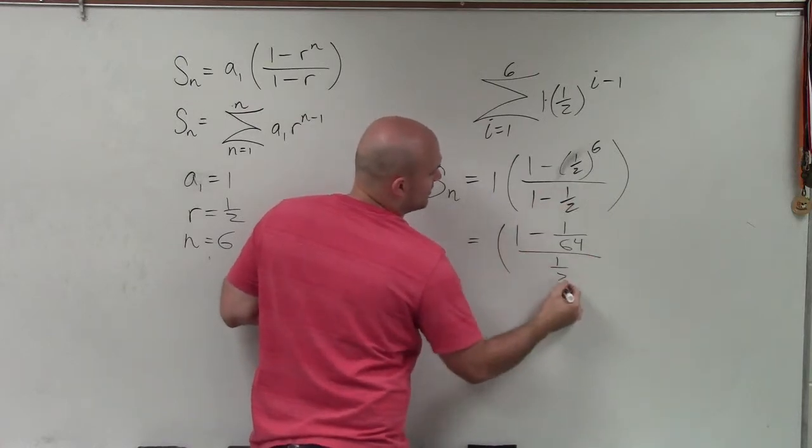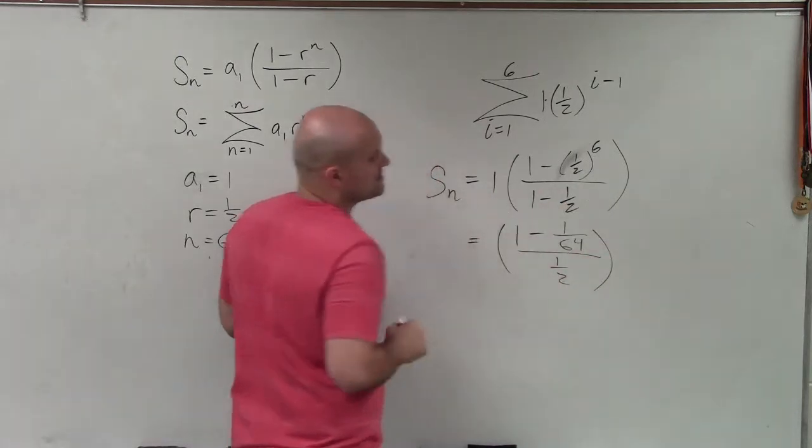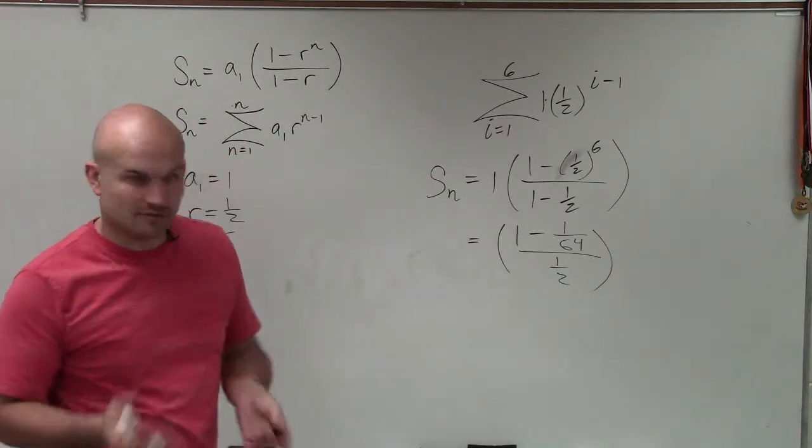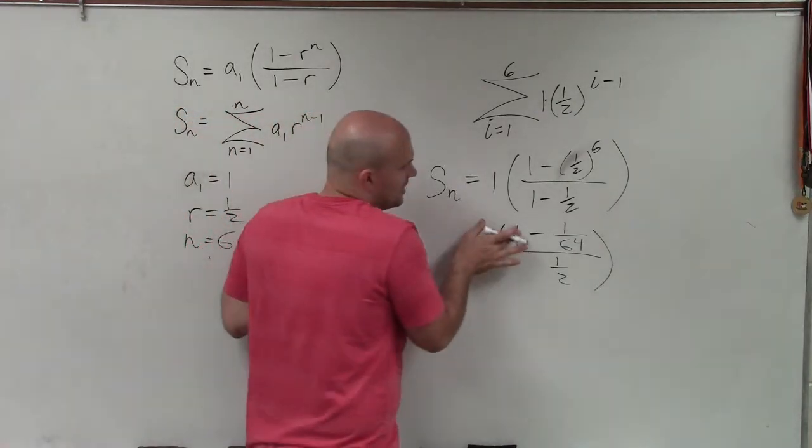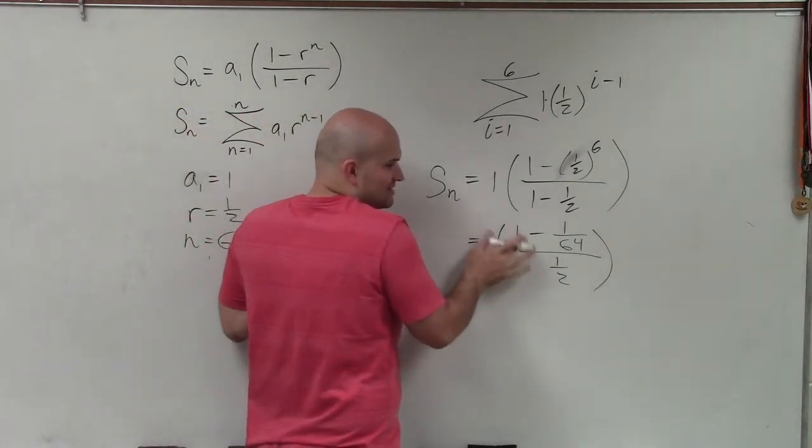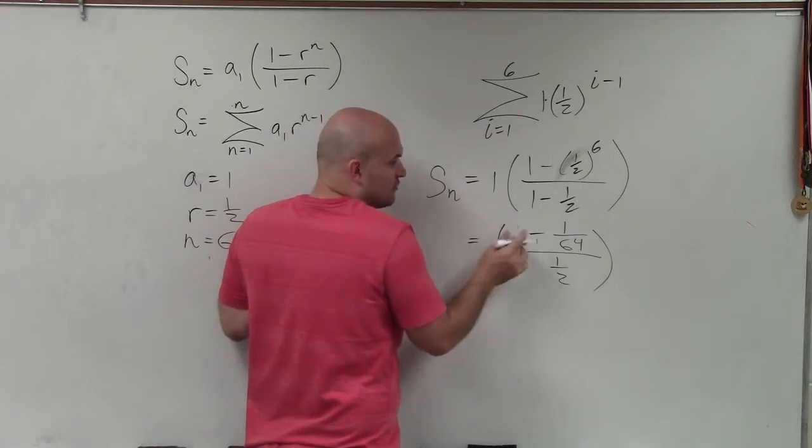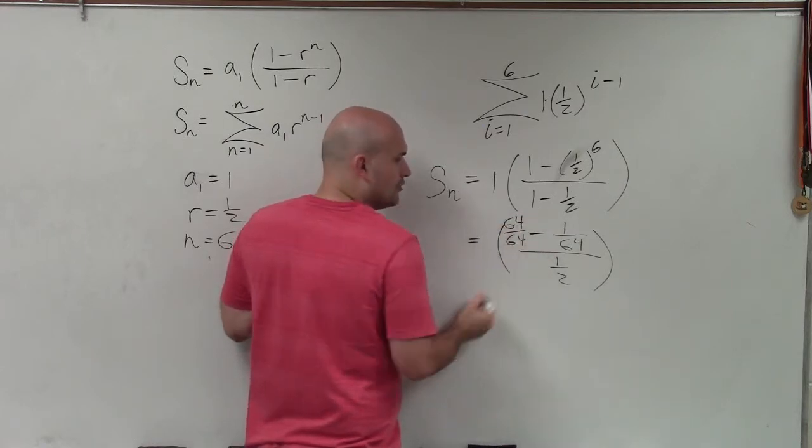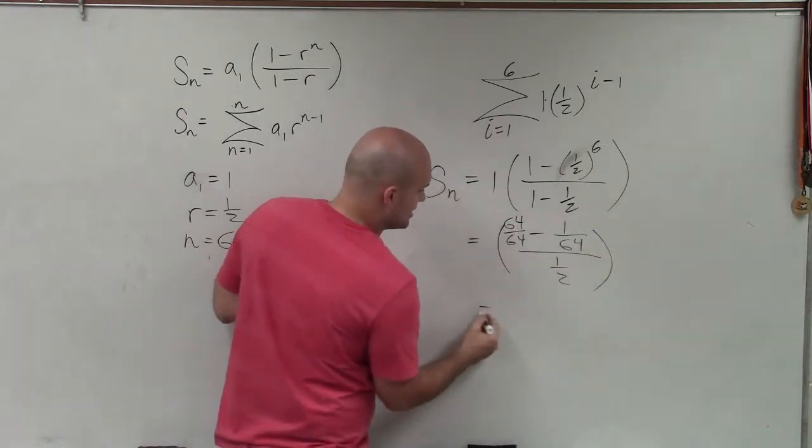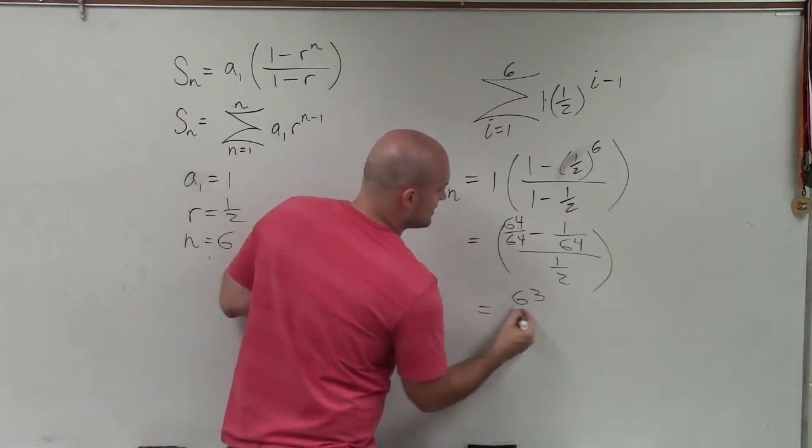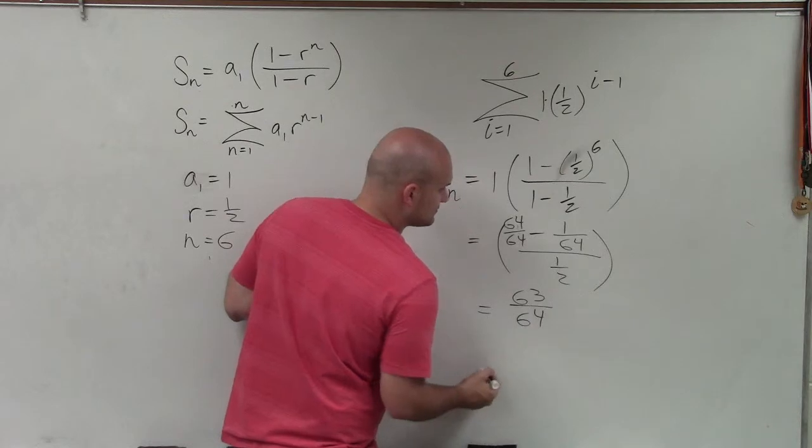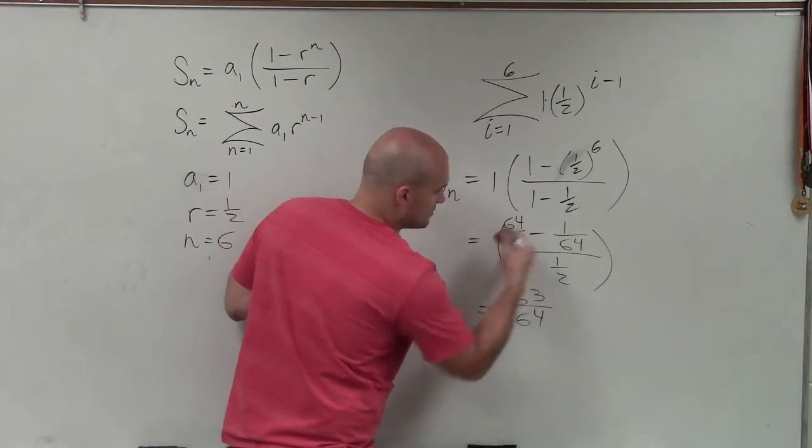And then 1 minus 1 half is 1 half. So 1 minus 1 over 64 is going to be 63 over 64. What I can do, I can't subtract it. I've got to rewrite this as a fraction. I want to rewrite it as a fraction with 64 in my denominator. So I rewrite it as 64 over 64. Now I subtract across. So therefore, I have 63 divided by 64.